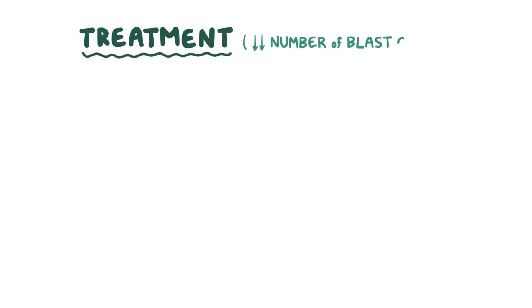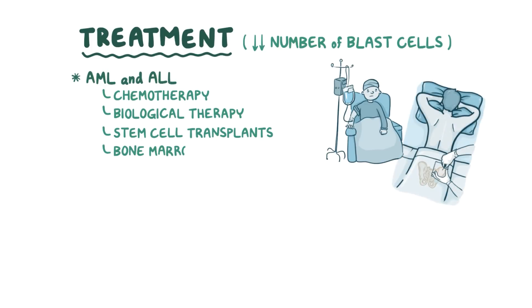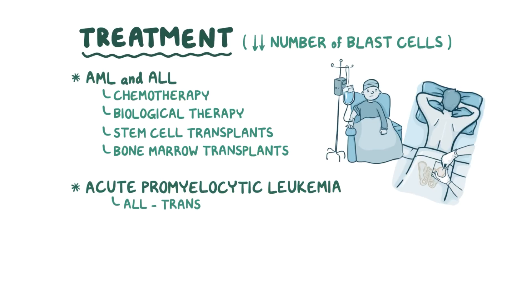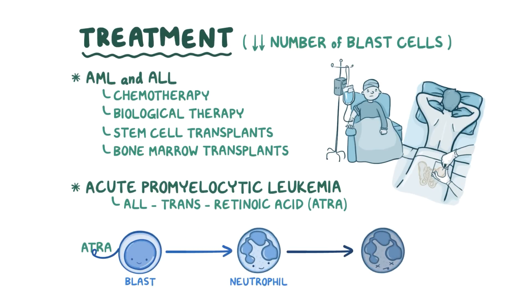Treatment of acute leukemia is mainly aimed at reducing the number of blast cells to allow other blood cells to develop normally. Treatment of AML and ALL is based on the type and stage of the cancer, but in general involves chemotherapy, biological therapy, stem cell transplants, or bone marrow transplants. Acute promyelocytic leukemia can be treated with all-trans-retinoic acid, or ATRA, which is a derivative of vitamin A. ATRA binds to the disrupted retinoic acid receptor and causes the blasts to mature into neutrophils, which eventually go on to die, thereby clearing a lot of the blasts from the blood.